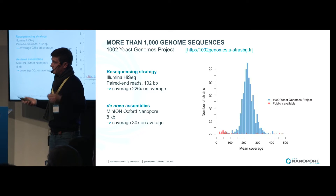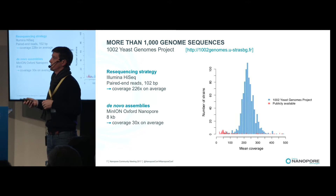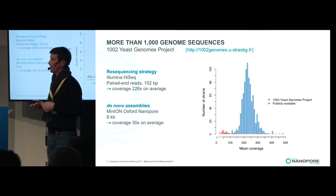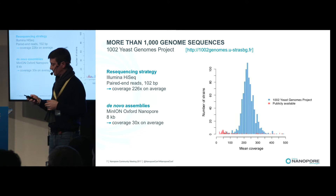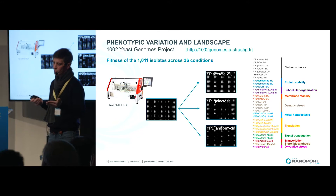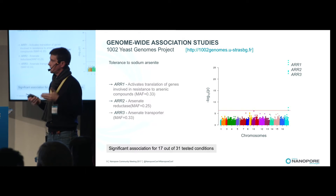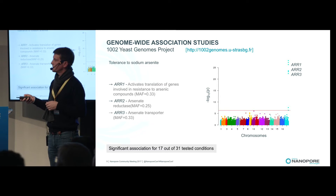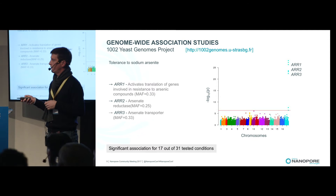In this project, we used two sequencing strategies. First, Illumina paired-end reads, 100 base pairs with high coverage. Also, in order to have a better look at structural variants, we used MinION Oxford Nanopore, 8 KB reads with coverage of 30x on average, for good de novo assemblies and structural variant detection. At the same time, we looked at phenotypic variation in 1,011 isolates in 30 conditions, and performed genome-wide association studies for 36 conditions — one example being tolerance to sodium arsenite. In total, we found significant associations for 17 out of 31 tested conditions.